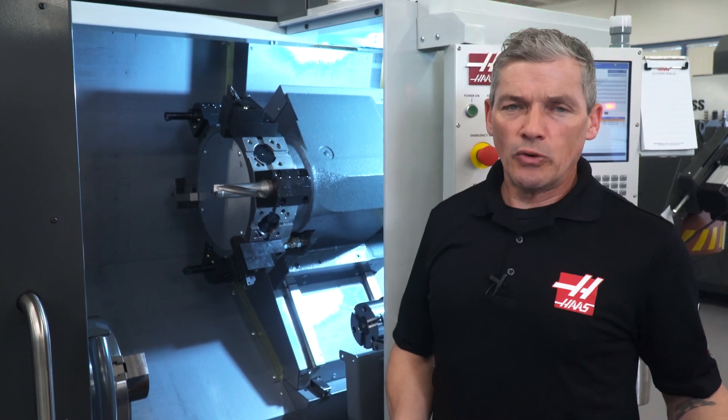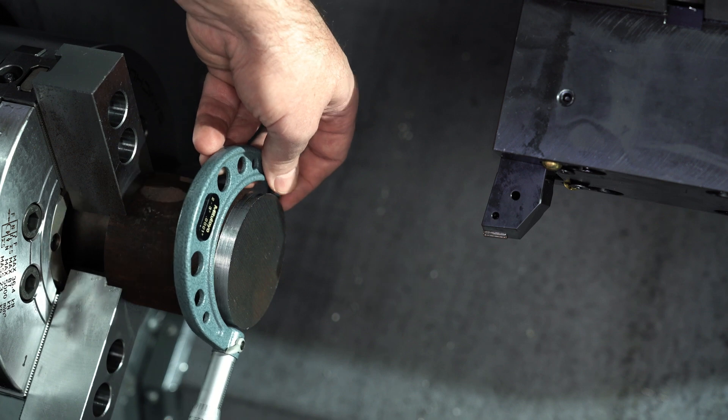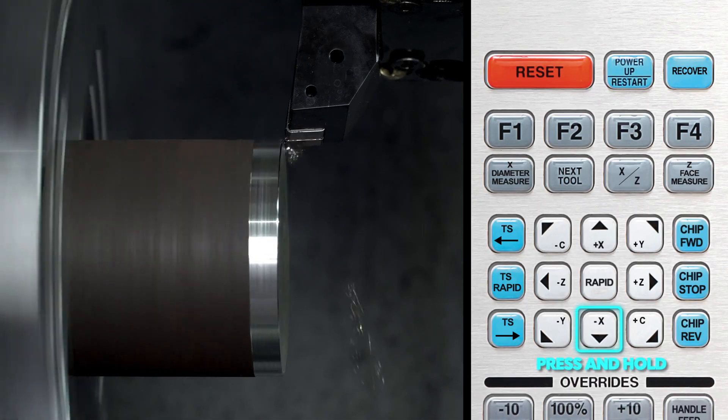Remember, if we were doing this manually, for tool one, we turn an X diameter and measure it with a mic, then face the part and set our Z offset.